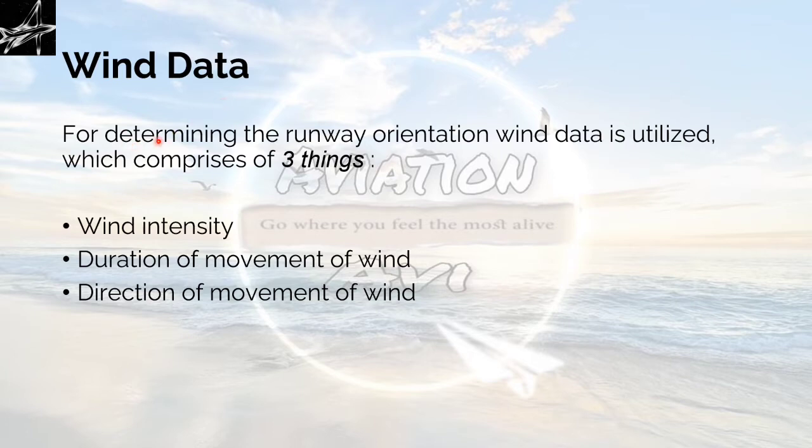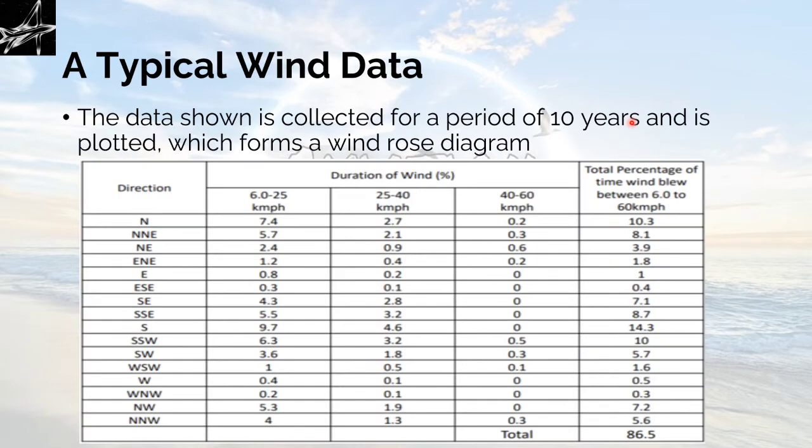The second concept is the concept of the wind rose diagram. Wind data for determining runway orientation is utilized, which comprises 3 things: wind intensity, duration of movement of wind, and direction of movement of wind. A typical wind data is collected for a period of 10 years and is plotted, which forms a wind rose diagram. So we have to collect data for approximately 10 years to get the exact value, and then it is plotted to form a wind rose diagram.